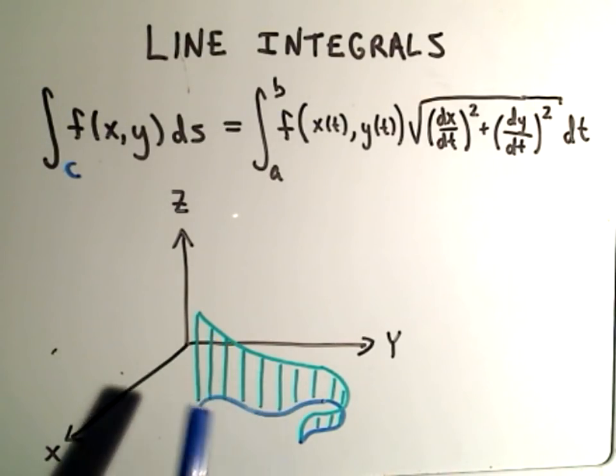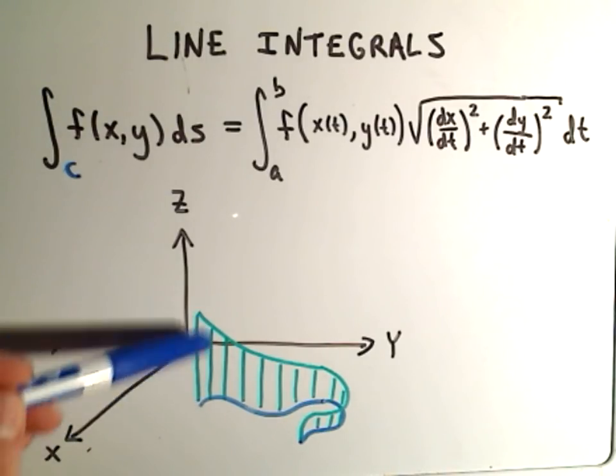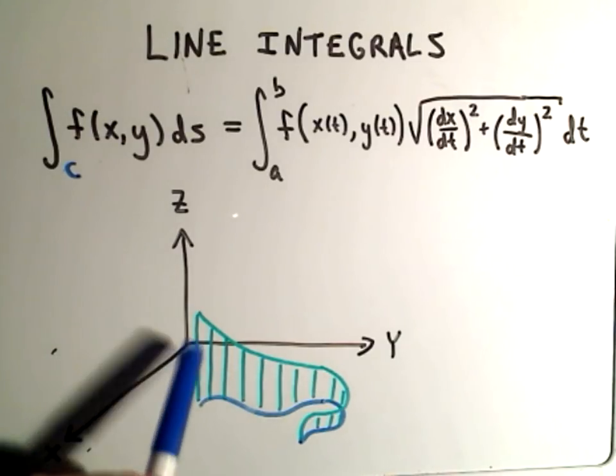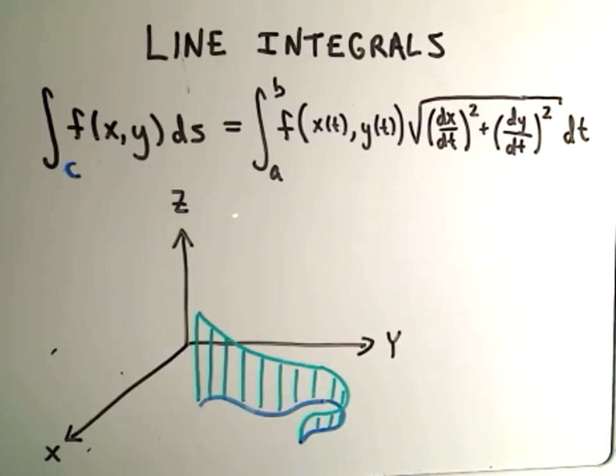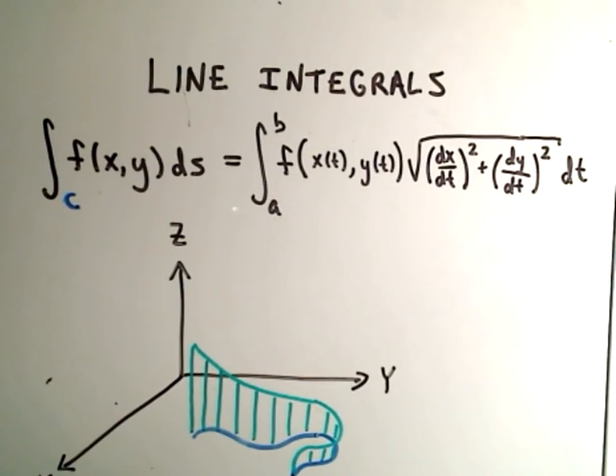You can almost imagine that this curve, it's almost like a curtain, and we're finding the area underneath the curtain. A curtain's not nice and flat, it may bend and move around, so maybe that's at least one intuitive idea to what you're doing here.